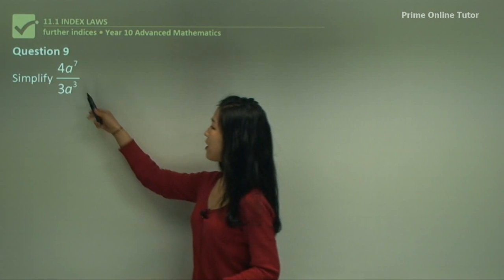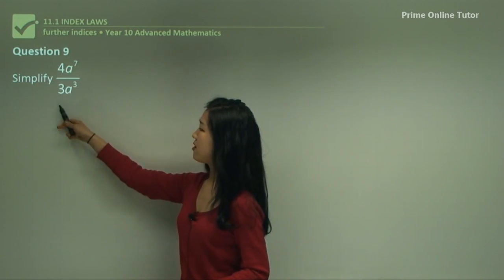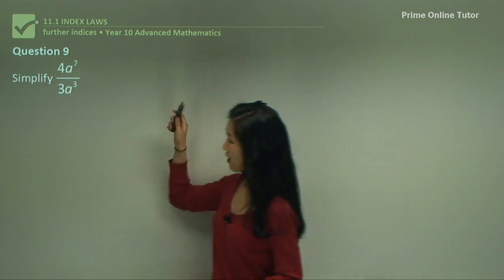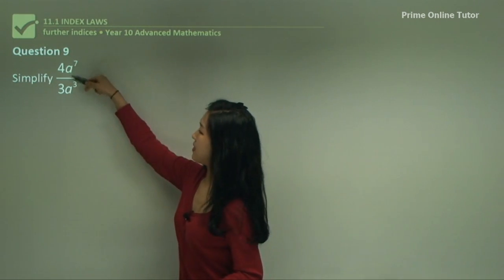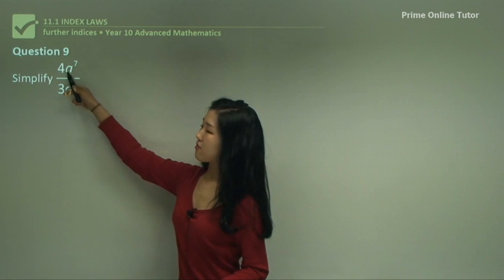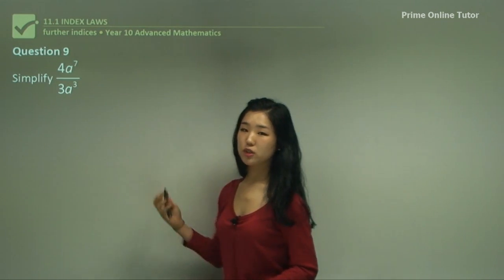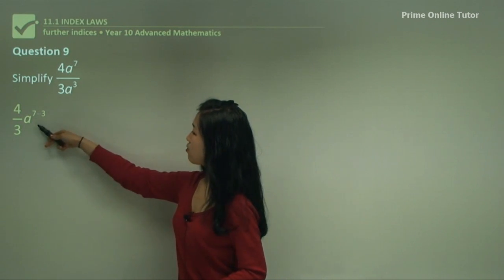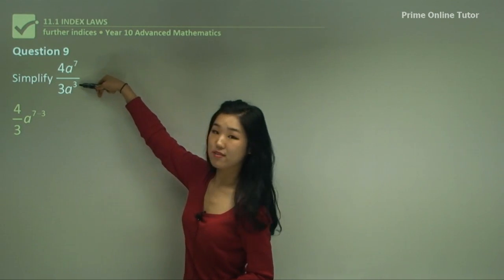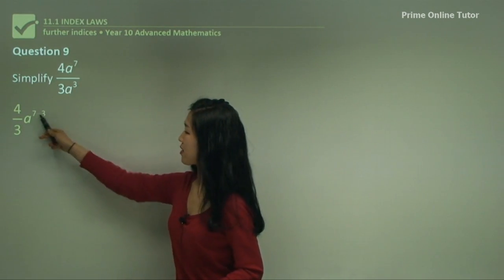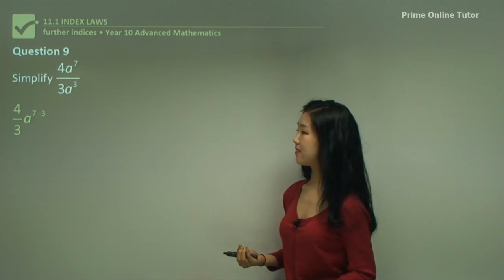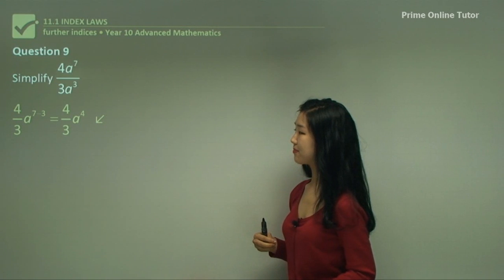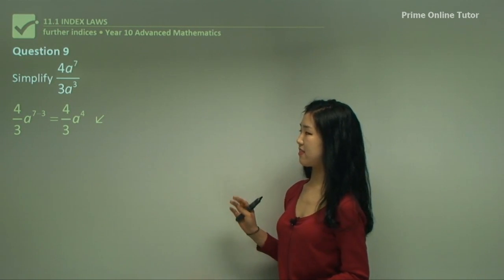Question nine. We're dividing 4a to the power of 7 by 3a cubed. First make sure they have the same base — they do. For the coefficients, leave the coefficient as it is: 4 on 3. Then a will be 7 minus 3 because we're dividing, so we subtract the indices. Leave the base as it is — that simplifies so the power is now 4.